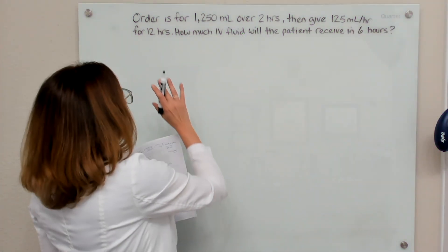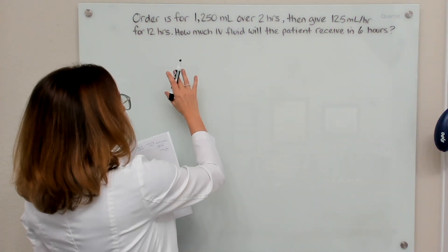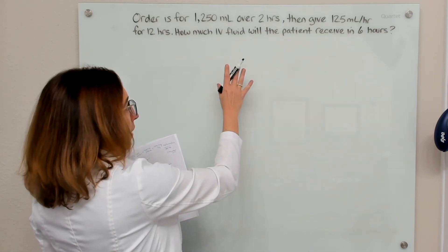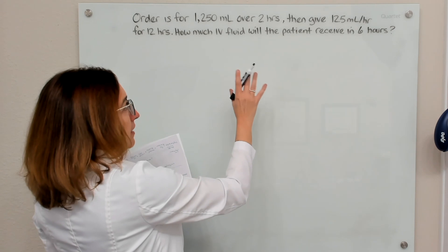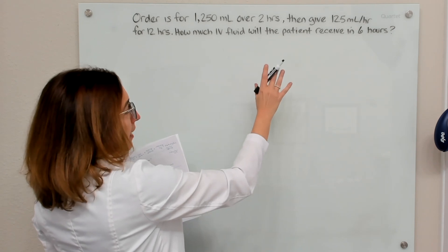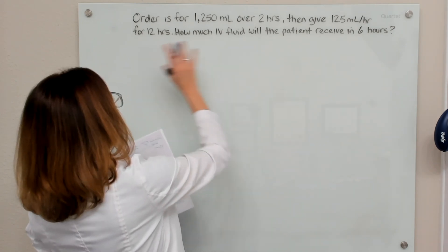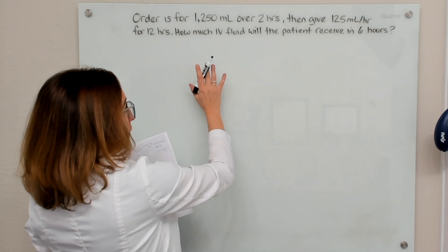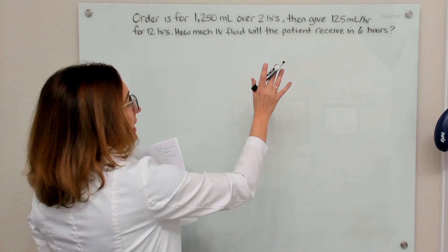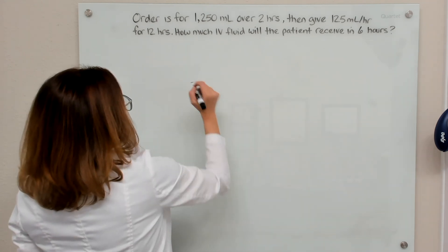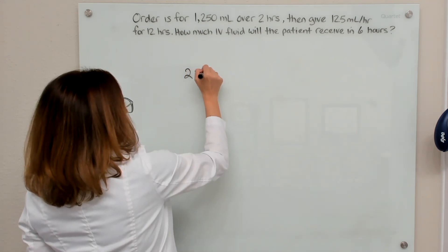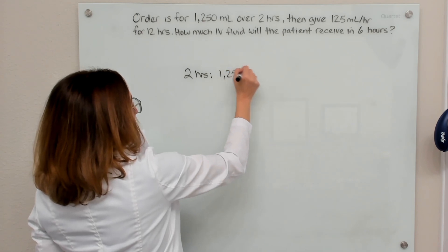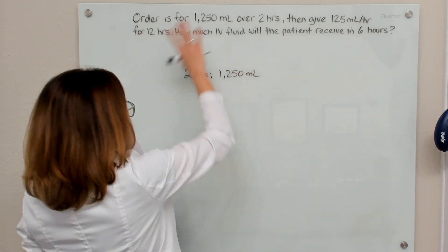With this first problem, we have an order for 1,250 milliliters to be given over two hours and then given at a rate of 125 milliliters per hour for 12 hours. The question is: how much IV fluid will the patient receive in six hours? For the first two hours, they will be getting 1,250 milliliters because that's what's ordered.